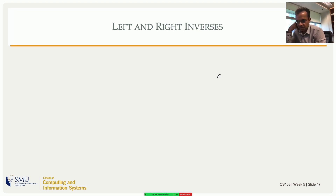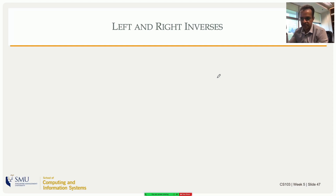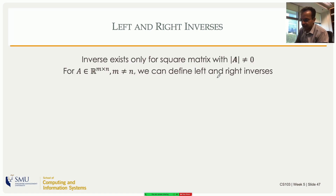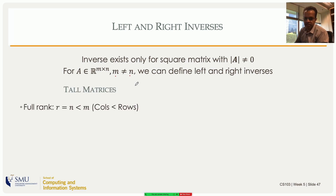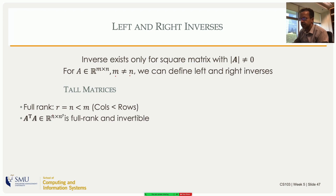For a square non-singular matrix you have an inverse, but for a rectangular matrix the inverse is not even defined. The standard inverse is called a double-sided inverse because multiplying on the left or right gives I — possible only for square matrices. For a rectangular matrix you might still want something like an inverse. For a tall matrix that is full rank, the number of columns is less than the number of rows, and A transpose A is a small full-rank matrix that is invertible.